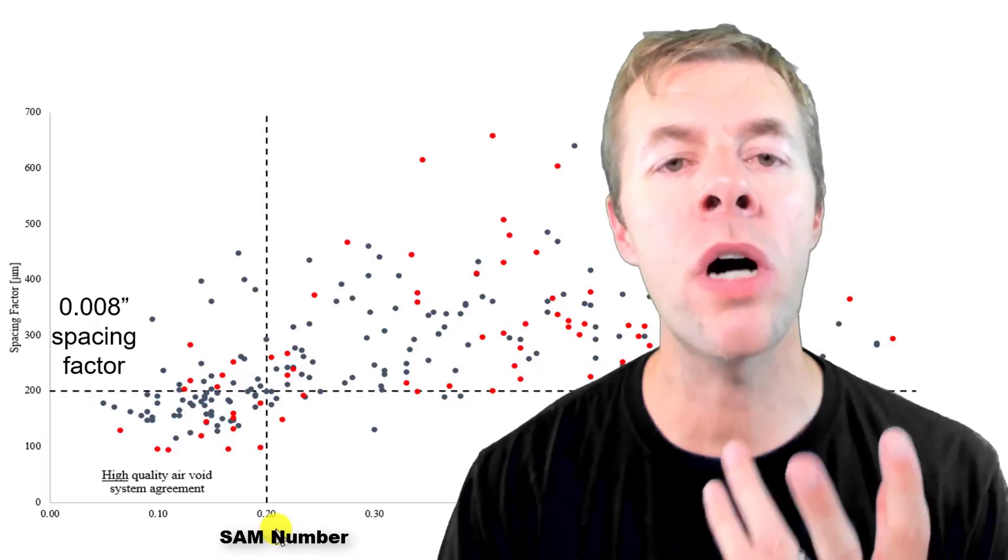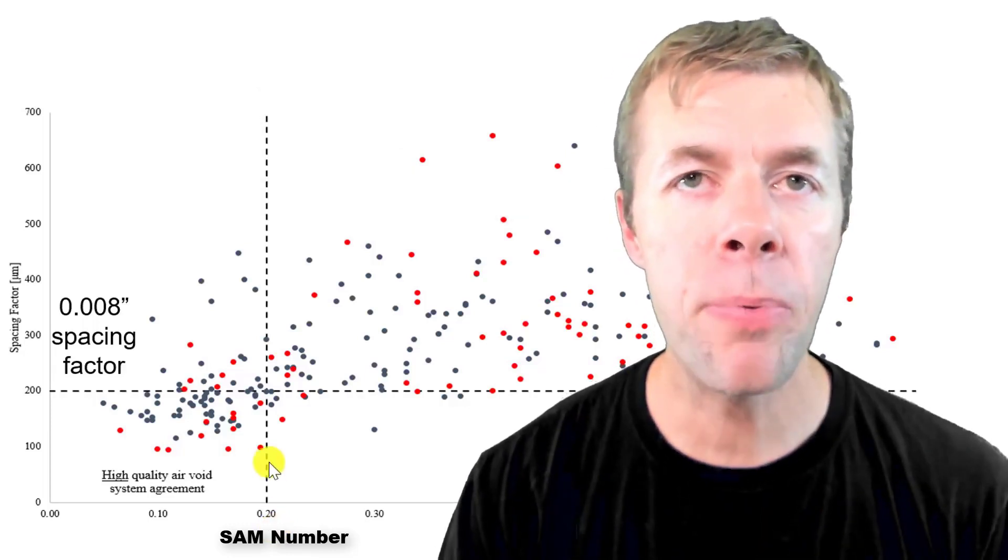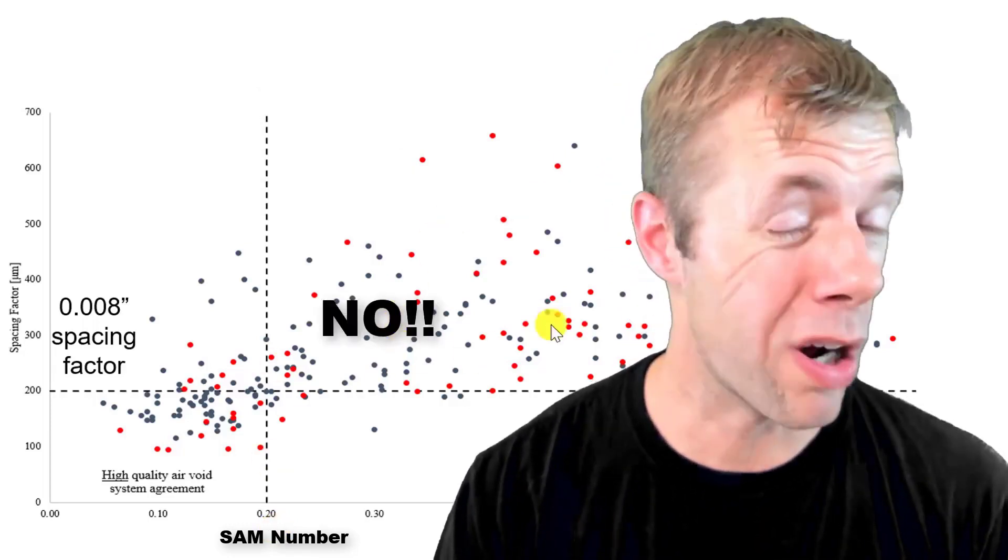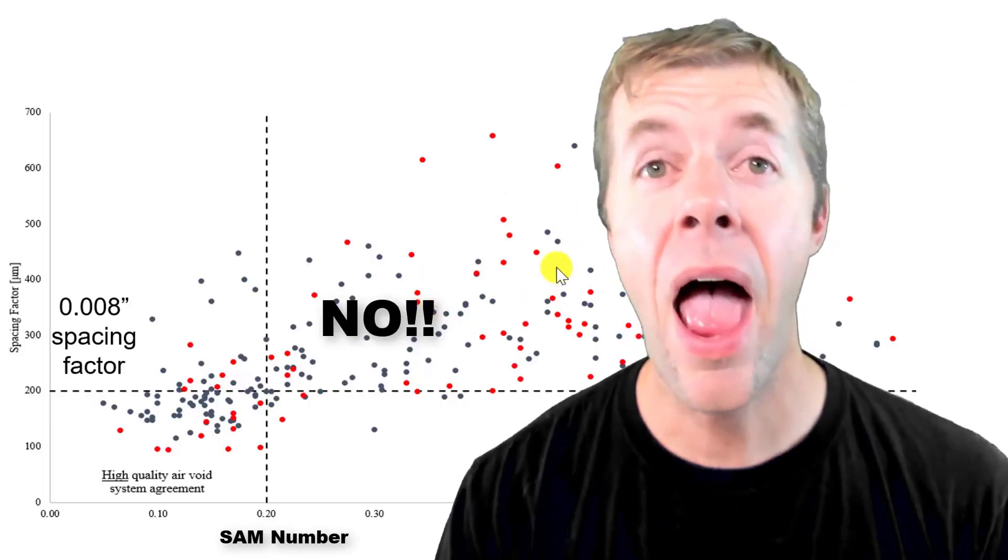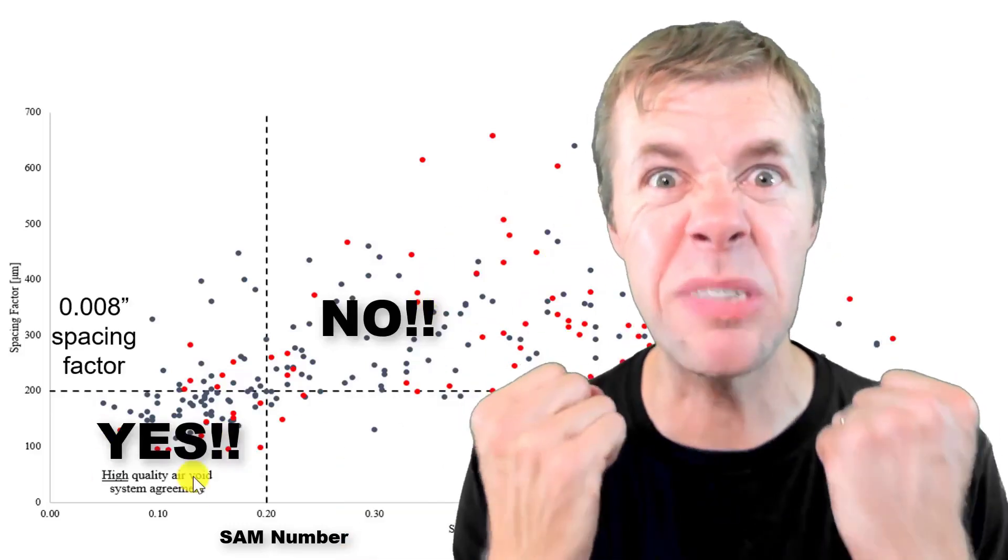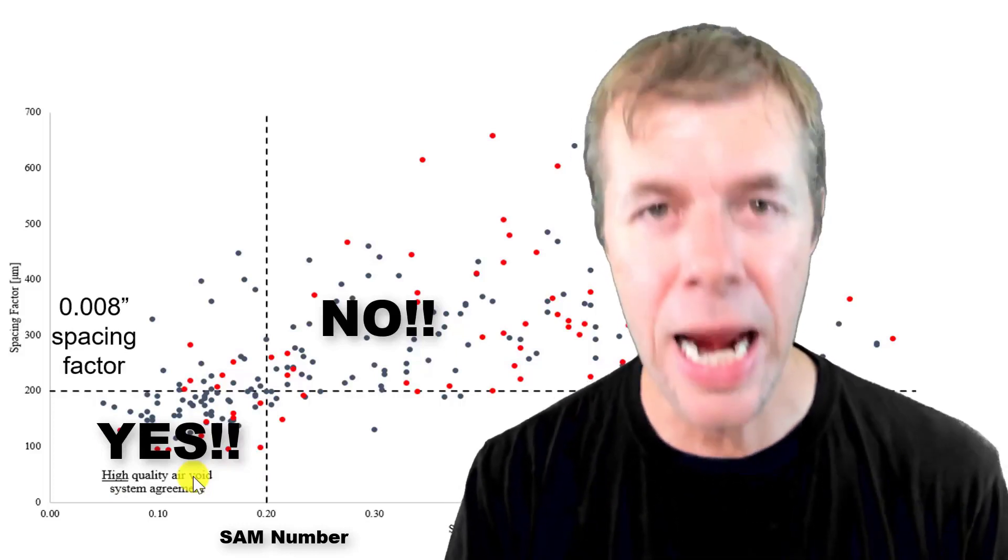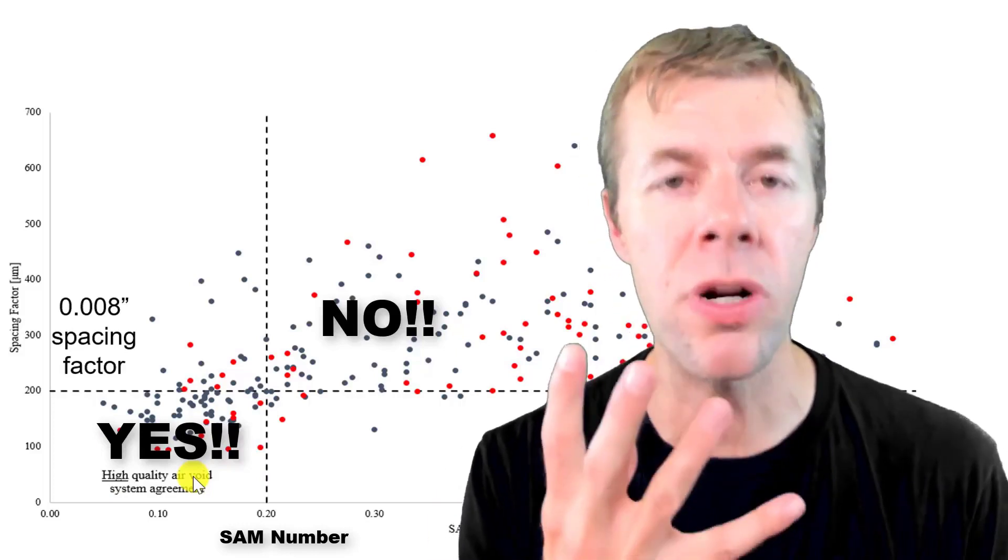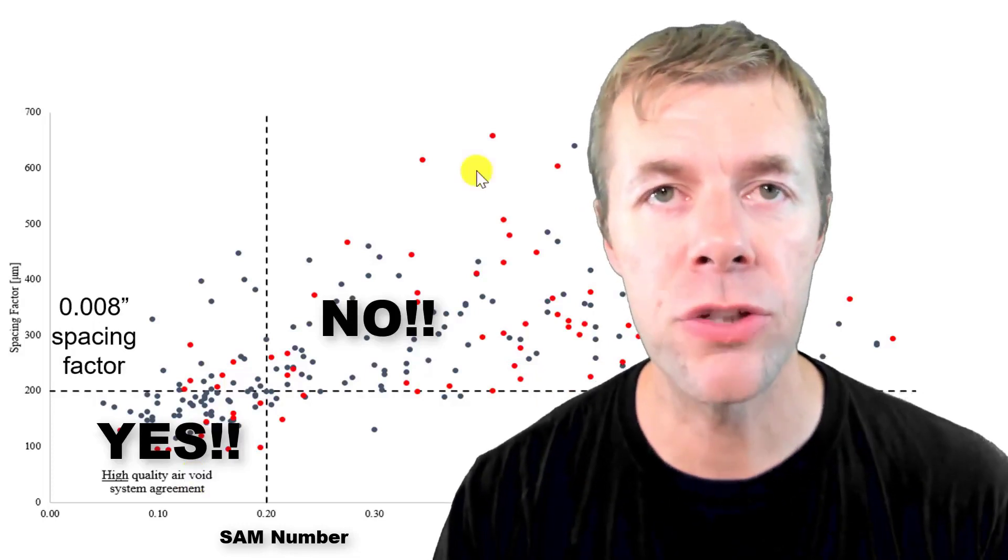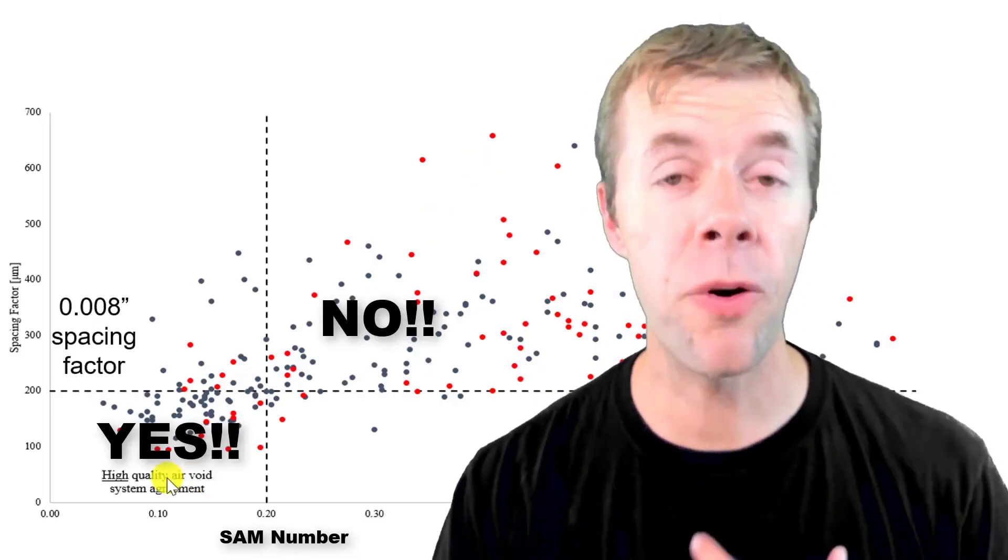This does a great job with these 227 mixtures of separating them into the no quadrant and the yes quadrant. For 227 mixtures there's about an 88% agreement. That means 88% of the time the data falls into this quadrant or this quadrant. This is from my research group and also from the US Department of Transportation.